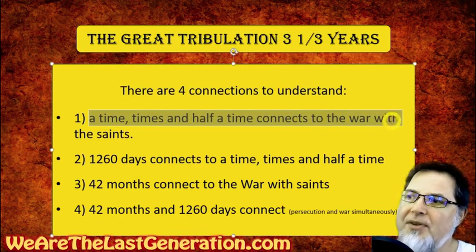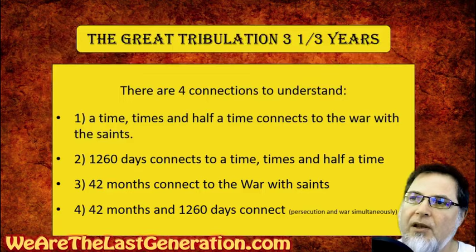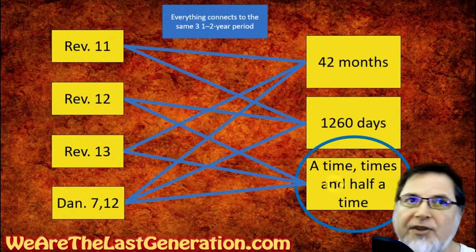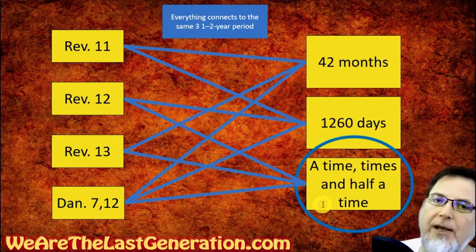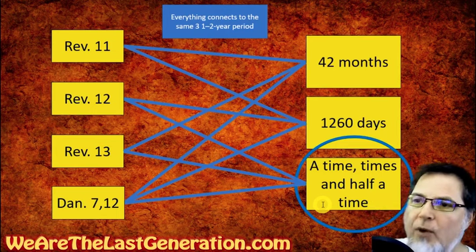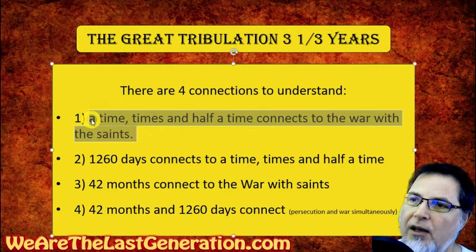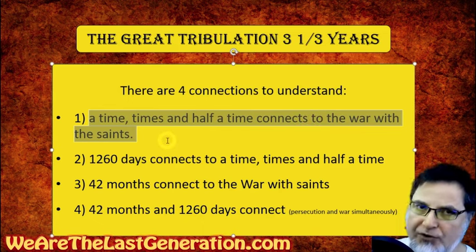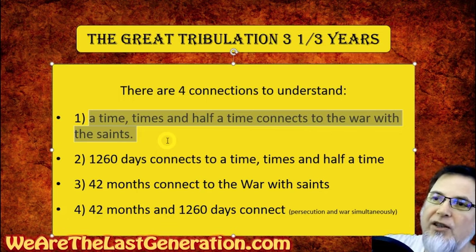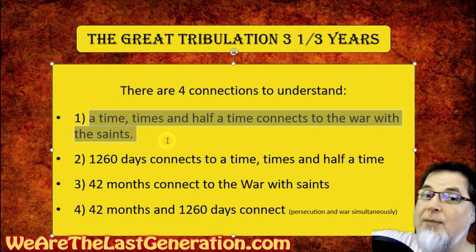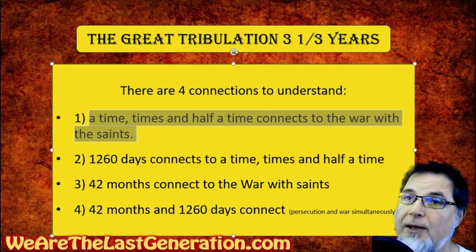Connection number one: we have to connect a time, times, and half a time to the war with the saints. When we understand Daniel chapter 7 and 12 talking about a time, times, and half a time, and see the first box on the right side, that phrase is the very first thing we need to understand about the three and a half year period. We'll see the war with the saints in Daniel, see it in Revelation, and connect those together. That's the first connection.